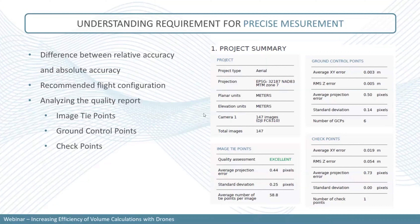You also want a good flying altitude, which will give you the corresponding ground sample distance (GSD) needed for your drone project. The GSD is essentially the best accuracy you can achieve. This leads to the difference between relative and absolute accuracy — two concepts that can sometimes be confusing, so let's differentiate them.